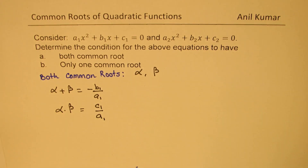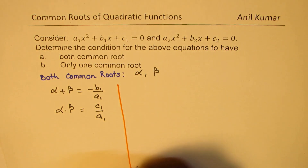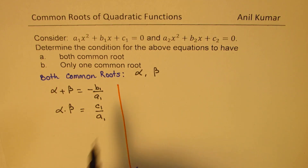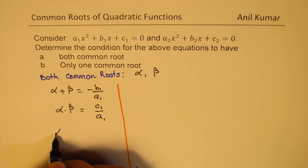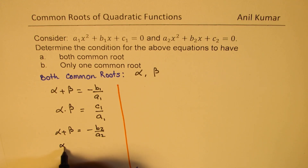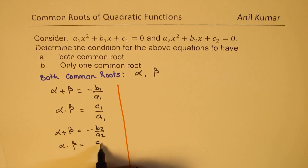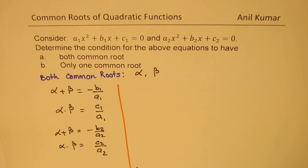The product of the two roots, alpha times beta, will be c1 over a1 from the first equation. Since they are common, we also have from the second equation that alpha plus beta equals minus b2 over a2, and alpha times beta equals c2 over a2.